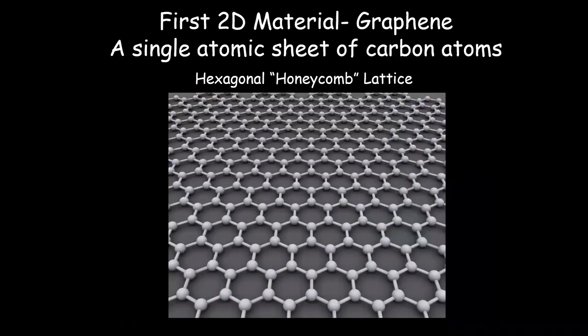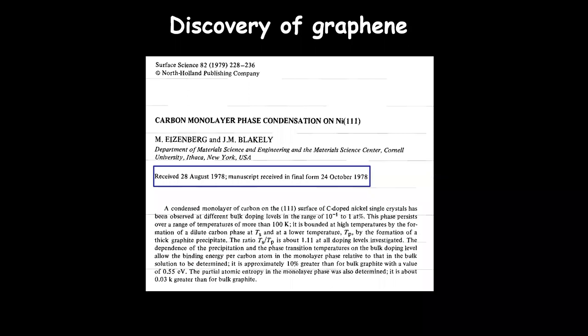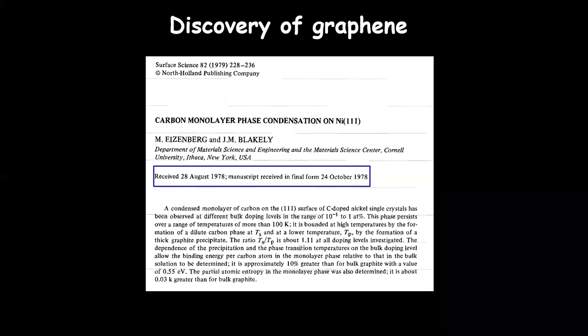Let me start with the beginnings of two-dimensional materials. The first 2D material which was isolated was graphene — a single sheet of carbon atoms arranged in a hexagonal structure. It was first discovered about 40 years ago. This was the first growth of graphene on a metal substrate, growing a carbon monolayer on a nickel substrate — a paper in surface science 40 years ago that received on the order of 400 citations.